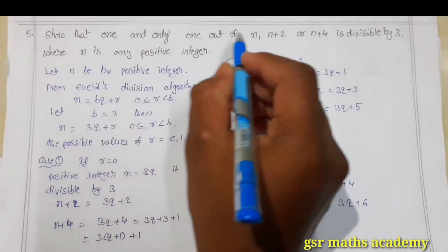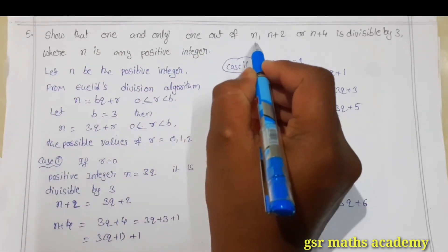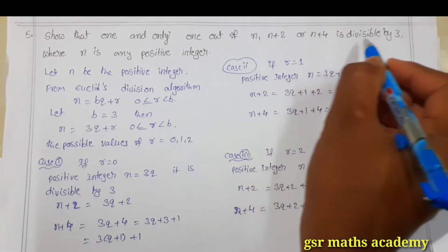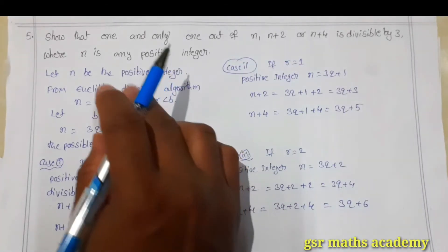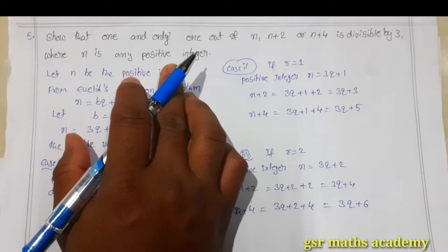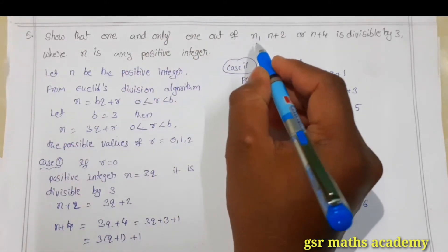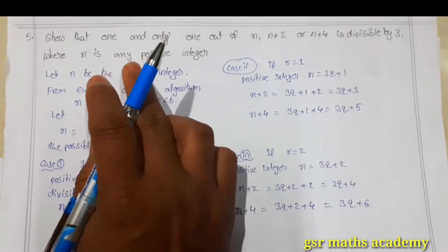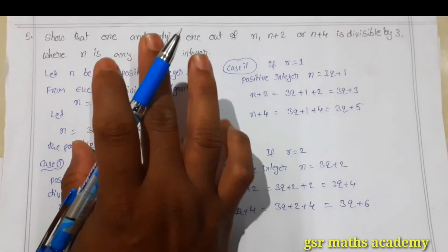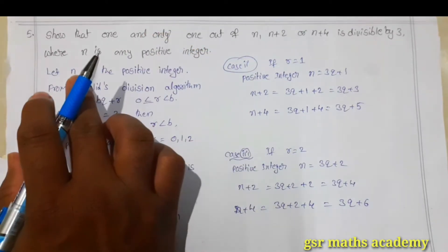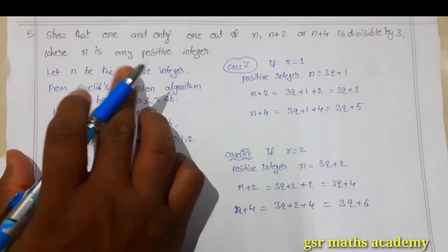We need to prove that 1 and only 1 out of n, n plus 2, or n plus 4 is divisible by 3, where n is any positive integer. We need to show that out of n, n plus 2, and n plus 4, only one number is divisible by 3. For that, I am taking n as a positive integer.